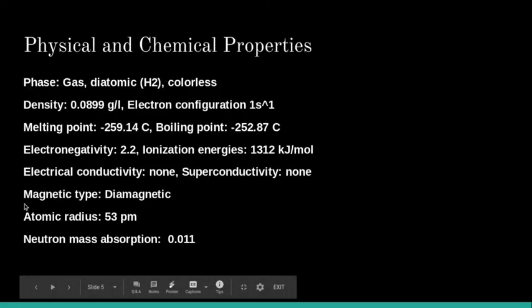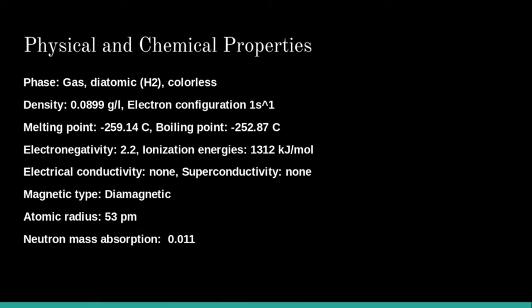Physical and chemical properties: It is a gas, diatomic in nature, colorless. It has a density of 0.0899 gram per liter. It has electron configuration of 1s^1. Melting point of minus 259 Celsius, boiling point of minus 252 Celsius. It has electronegativity of 2.2, ionization energy of 1,312 kilojoules per mole.